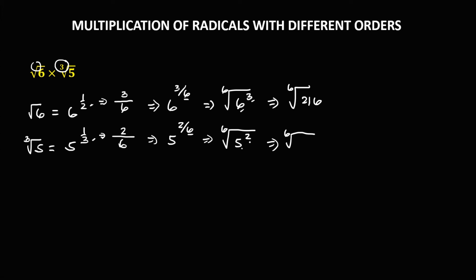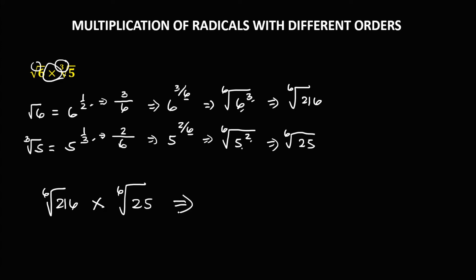Then simplify: 6 to the power 3 is 216, and 5 to the power 2 is 25. To find the product, we have the 6th root of 216 times the 6th root of 25.